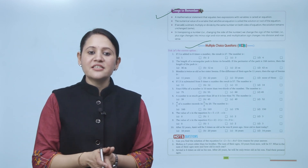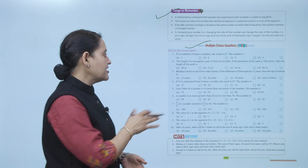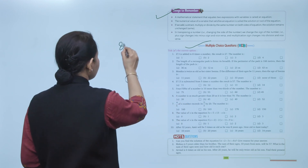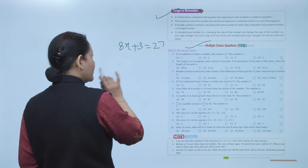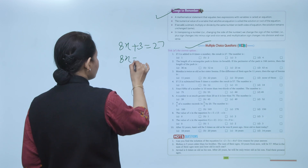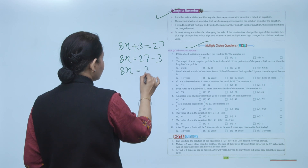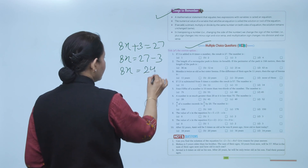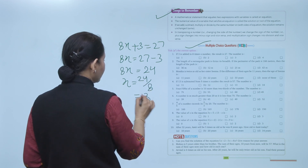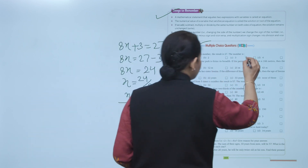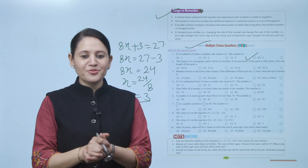Multiple choice question: if 3 is added to 8 times a number, the result is 27. What is the number? Let the number be X. Then 8X plus 3 equals 27, so 8X equals 27 minus 3 equals 24, giving X equals 24 divided by 8 equals 3. So X equals 3, and option C is the correct answer. This concludes the chapter on linear equations.